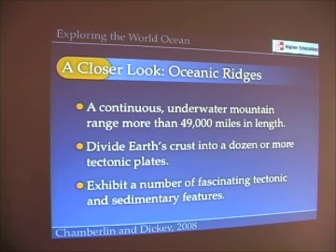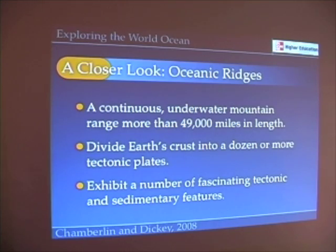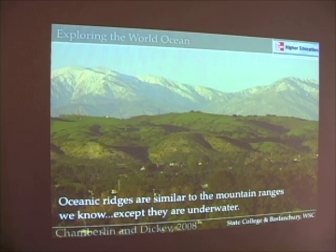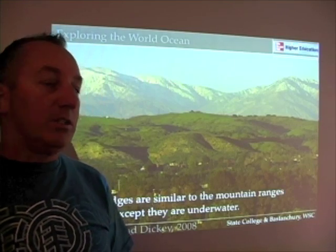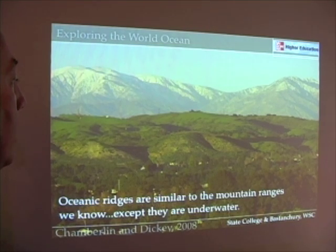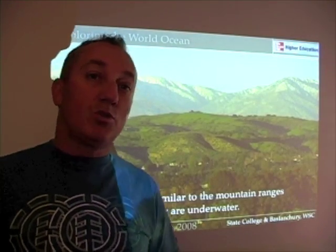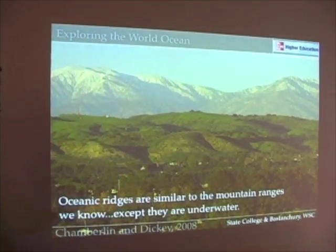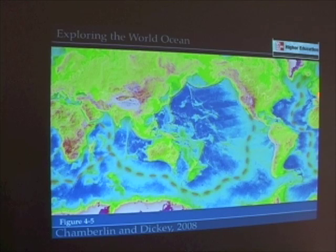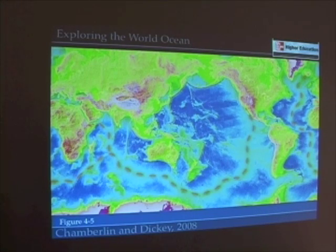Oceanic ridges form more than 49,000 miles of continuous underwater mountain range, and really divide Earth's crust into those dozen or so tectonic plates. They exhibit a number of fascinating features — if you think about local mountains like the San Gabriel or San Bernardino Mountains and imagine them underwater, that's the kind of landscape you'd see. They define divergent plate boundaries, where new seafloor is formed through the process of seafloor spreading, adding to Earth's crust.